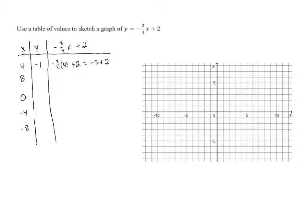Next we'll plug in x equals eight. This gives us negative three-fourths times eight plus two. Negative three-fourths times eight is negative six, and negative six plus two is negative four.